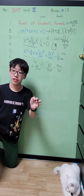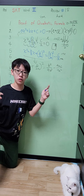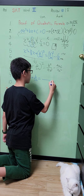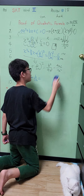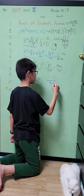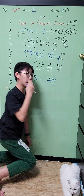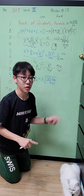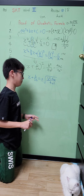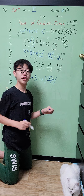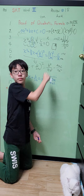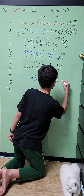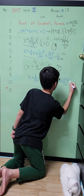Now we put square roots on both sides to eliminate the square on the left. And when we take the square root, it can be plus or minus, because a negative times a negative is positive and a positive times a positive is positive — which is why the equation has two possible answers. We can simplify the denominator: the square root of 4a² is 2a, so the right side becomes plus or minus the square root of (b² minus 4ac), all over 2a.